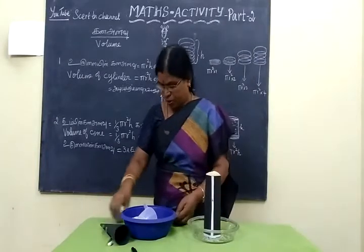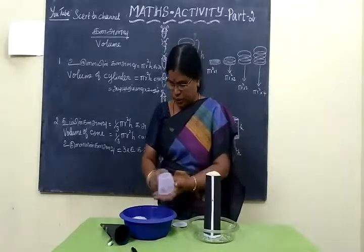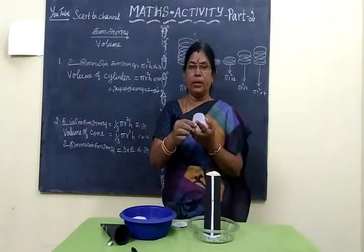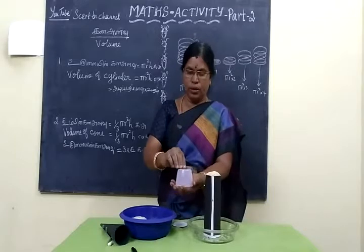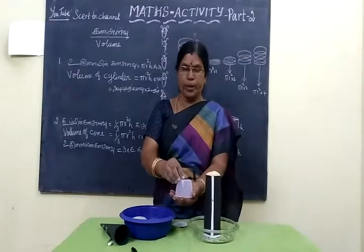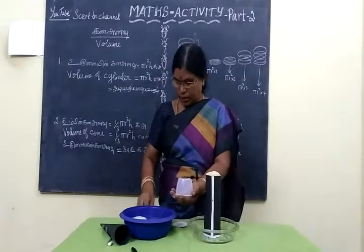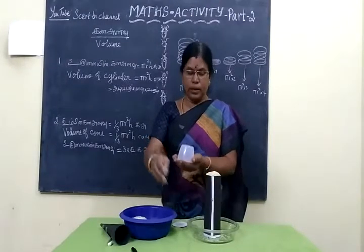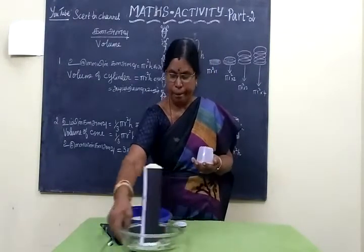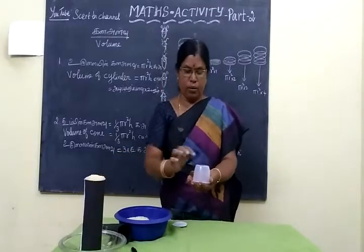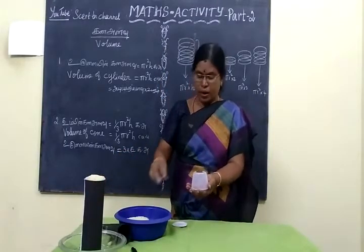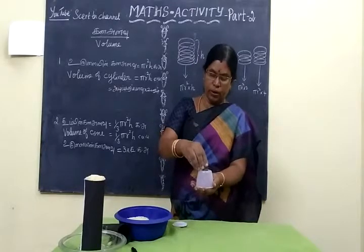Suppose if there is a coin — this is the coin. So we have πr² into 2, and again πr² into 2.